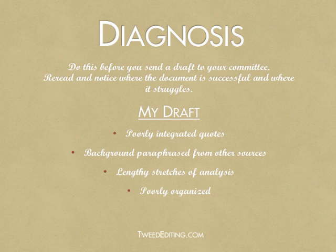So I perused each chapter and assessed the state of things. I found that the quotes I used really dictated the structure. My own argument was less pronounced than I would have liked, and I seemed to be hopping from quote to quote. I knew I had something to say, but I was leaning too heavily on the words of others. Similarly, I'd paraphrased the background of my research from other sources, and it seemed forcibly inserted into the chapters instead of naturally arising as it suited my argument. I did have lengthy stretches of analysis, but overall I could see that it was poorly organized, which was okay because this was just my first full draft.